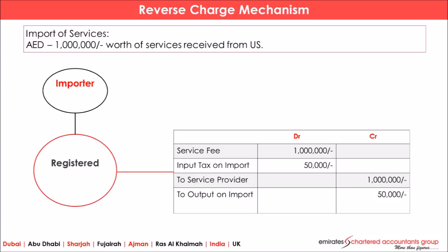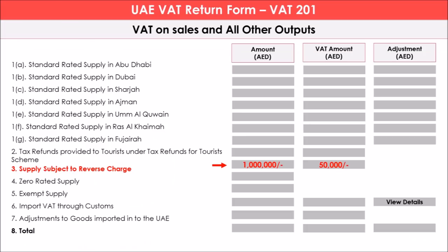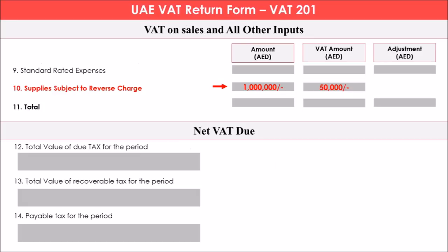Suppose one million is the value of imported services. Under reverse charge, we record an output VAT of 50,000 on import as well as input VAT of 50,000 on import. In UAE VAT return form 201, box number 3 is used to disclose the liability — one million value and tax liability of 50,000. However, the same can be reversed under box number 10 — one million and fifty thousand — so the net effect will be zero, but we must disclose those figures in the return form.